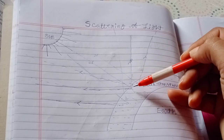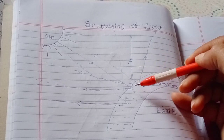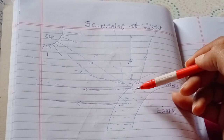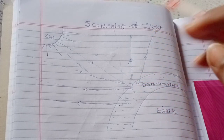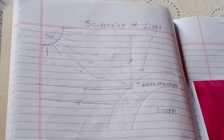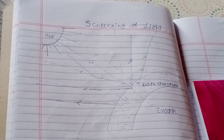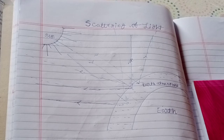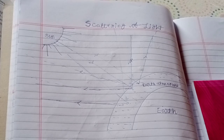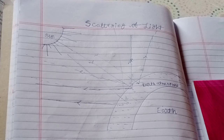When this electromagnetic wave hits the small particles present in the air, it bounces off in all directions. As a result of this, we are able to see all the objects which are present around ourselves.